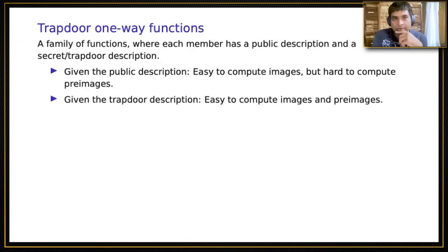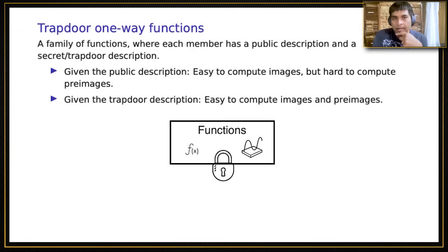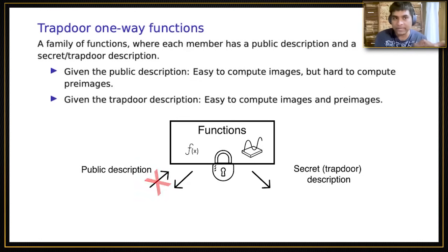The first expression is a trapdoor one-way function. These are a mainstay of cryptography. At a very high level, it's a family of functions wherein each member has two descriptions: a public description and a secret or trapdoor description. Under the public description, it's easy to compute the function one way but hard to compute inverses or preimages. In contrast, the trapdoor description has a little more information that enables one to also compute preimages.